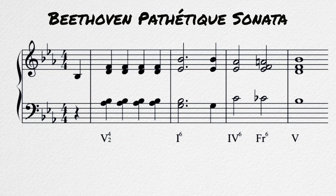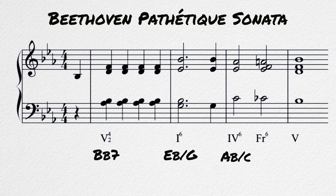A great example of the French augmented sixth comes from Beethoven, this time from the third movement of his Pathétique Sonata. This movement is in E flat major. We begin on the dominant, move to an inverted tonic, then to a four-six, then to a French augmented sixth, and then to a five chord. Notice the chromatic motion in both the bass and soprano line — this sliding action in both voices heavily draws the ear to the dominant.